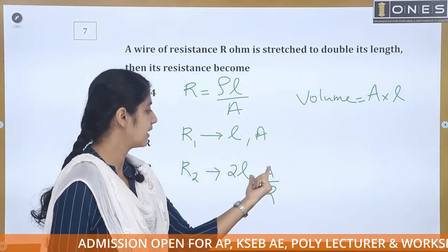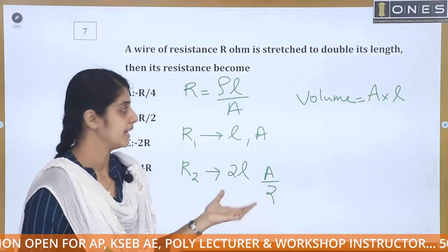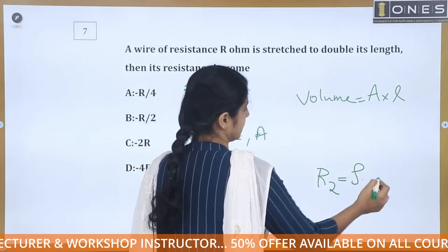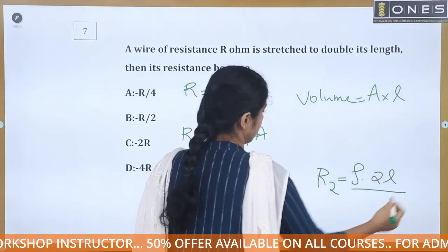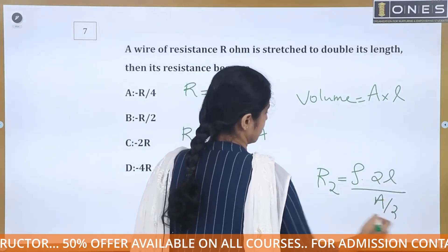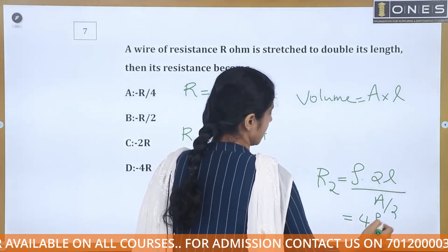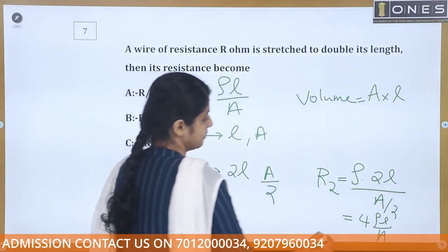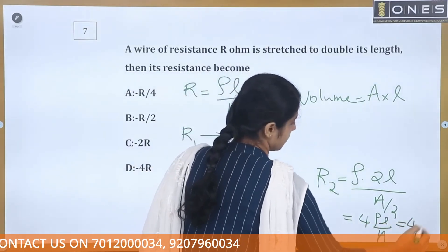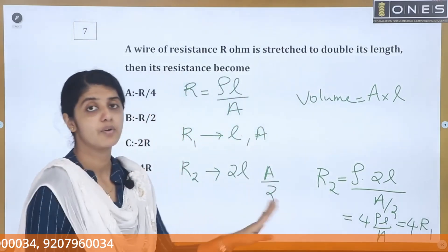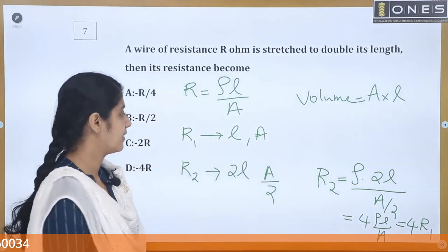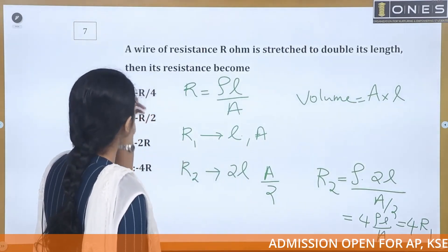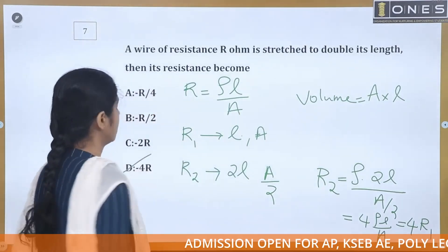When length becomes 2L, the area becomes A/2. So R2 = ρ × (2L) / (A/2) = 4 × ρL/A = 4 × R1. The new resistance is 4 times the previous resistance R1. The answer is 4R.